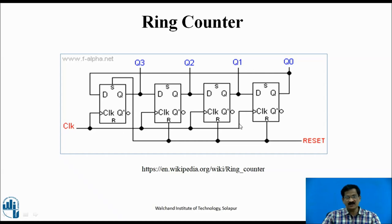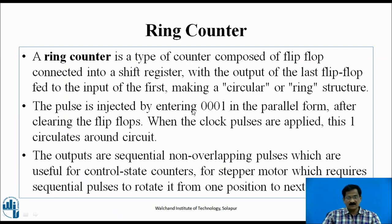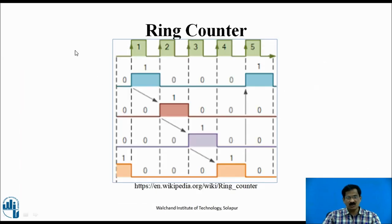At the next clock pulse, since Q3 is 1, Q2 becomes 1, so the status becomes 0, 1, 0, 0. At the next clock pulse, the status becomes 0, 0, 1, 0. At the next clock pulse, it becomes 0, 0, 0, 1. A ring counter is composed of flip-flops connected in a feedback shift register. The pulse is injected by entering 0, 0, 0, 1 in parallel form, and the injected pulse will keep circulating — shifting towards the left side repeatedly, as explained in the circuit diagram.